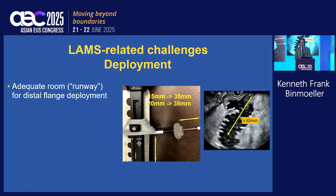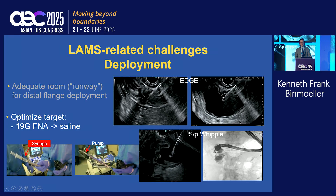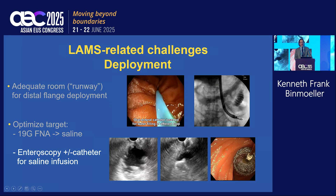Technically, we're looking at a 38-millimeter runway, but you need a minimum of 30 millimeters to safely deploy your distal flange. You will usually need to optimize your target. One way is to puncture with a 19-gauge FNA needle hooked up to a syringe already flushed, so you're not infusing gas. Hook it up to a pump — for the EDGE procedure, fill the remnant stomach with saline so it becomes a spacious target. After a Whipple, you can puncture the jejunal limb and fill it.